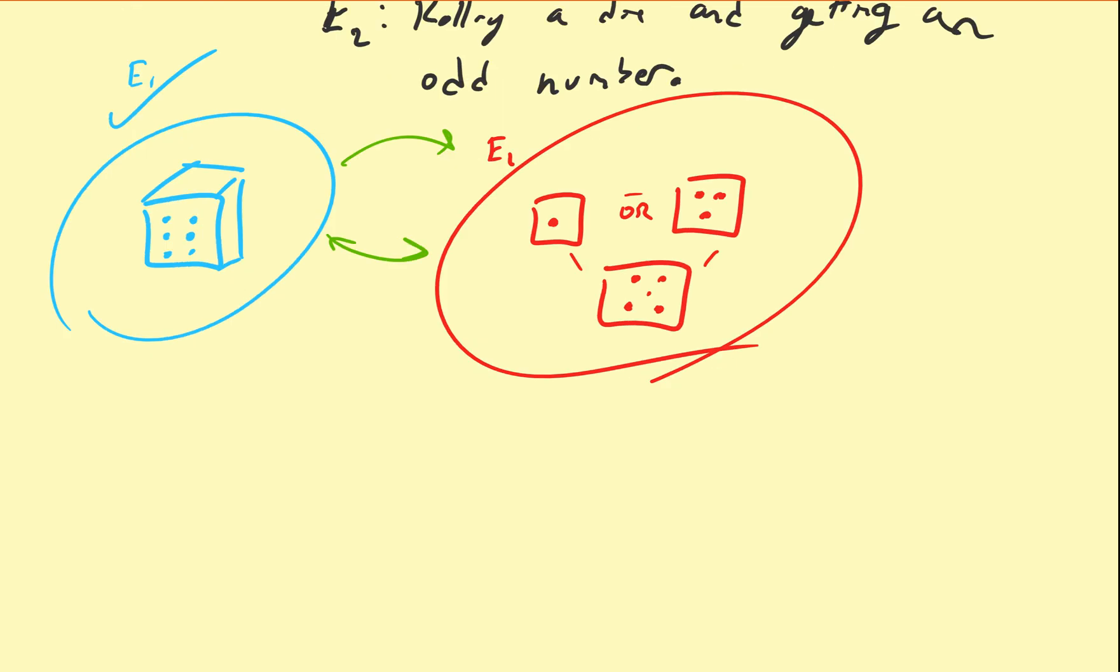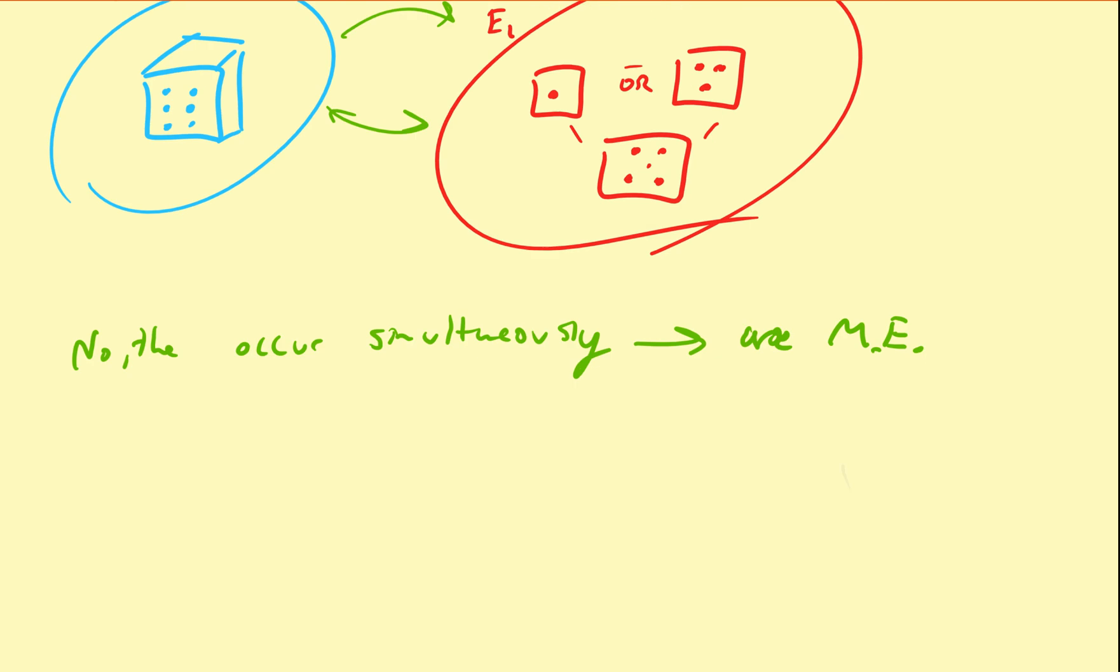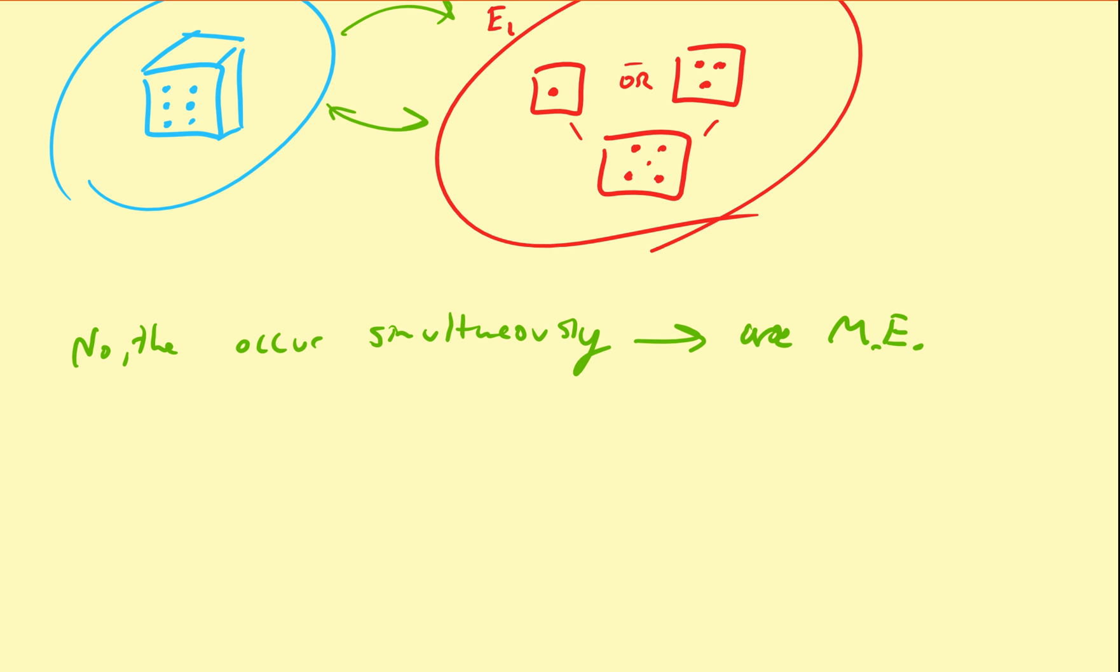Now, are these events independent or dependent? Well, they are the same exact die that are in question here. So if we get a 6 on the die, can we also get an odd? The answer is no. Therefore, the likelihood of getting an odd depends on the value for which that we actually got. So that means this is dependent.